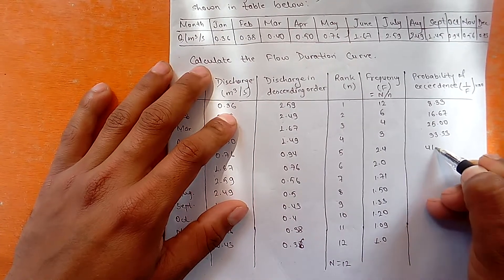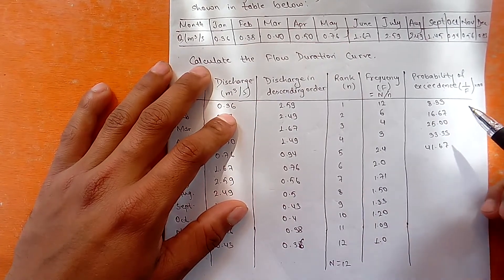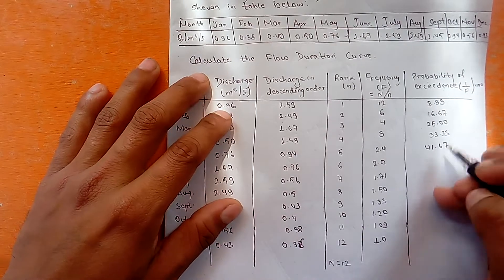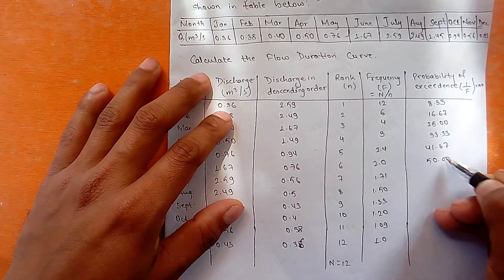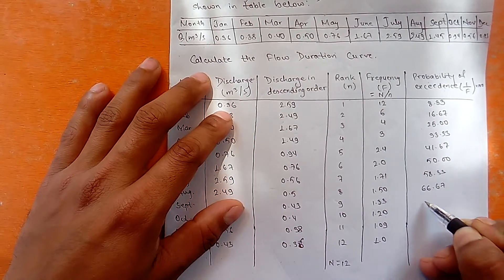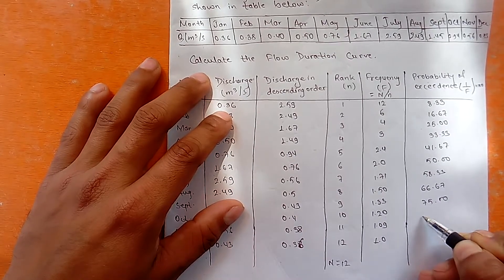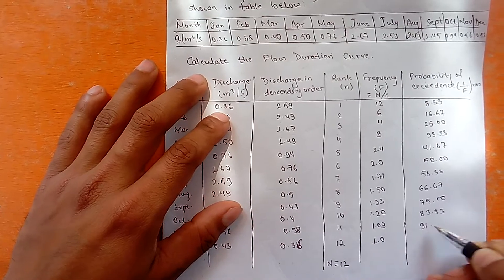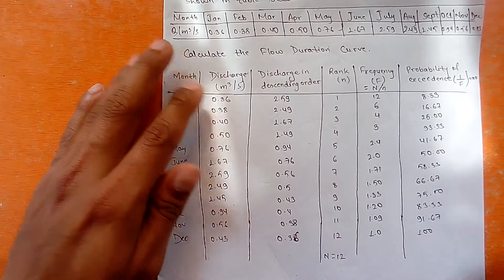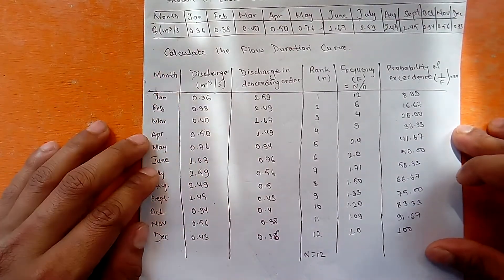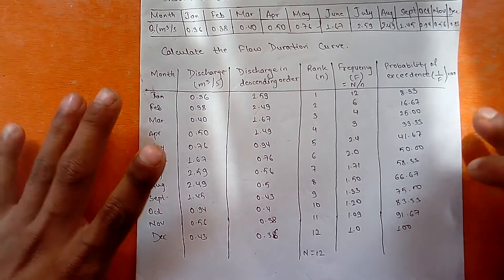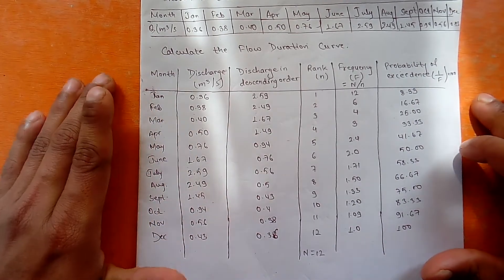You can pause the video to calculate the remaining values. The probability of exceedance is simply 100 divided by the frequency for each respective month. The remaining values are: 33.33, 41.67, 50, 58.33, 66.67, 75.00, 83.33, 91.67, and 100%. This completes the calculation table for the flow duration curve.